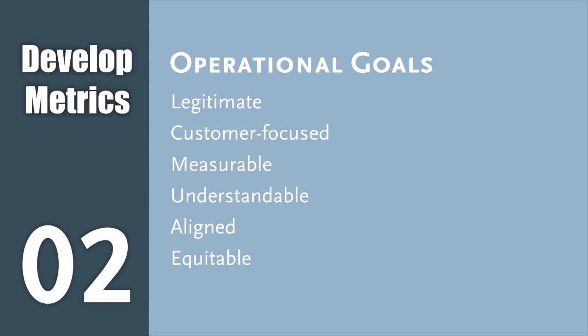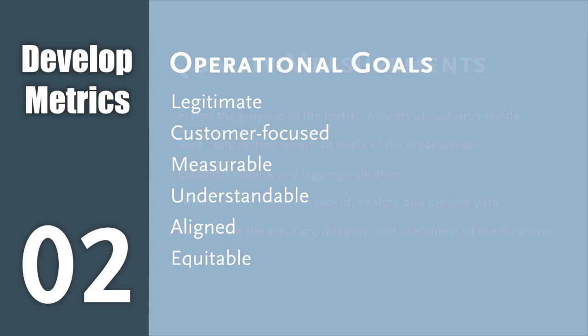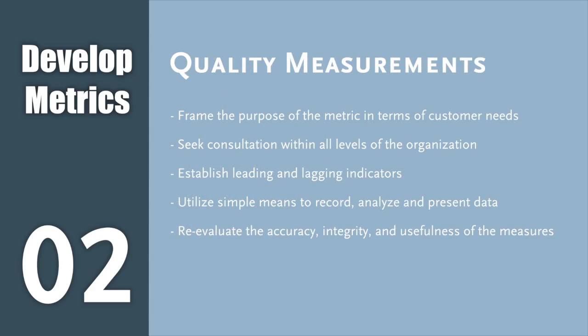Operational goals should be legitimate, have an official status, be customer focused — either external or internal — measurable, understandable, aligned and integrated with higher levels, and equitable. To encourage continual improvement, some goals should be stretch goals but also be achievable. Effective quality measures can be tied back to the needs of the customer and facilitate participation at all levels of the organization. Certain measurements can provide leading and lagging indicators, which can help us anticipate problems and confirm that corrective actions are effective.